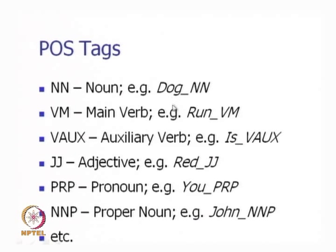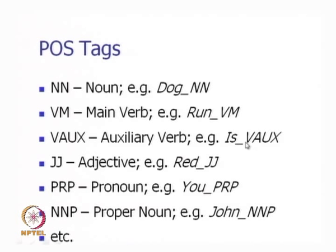Each word needs a categorization in the text; we do not leave out any word. VM is a very important tag, namely the main verb of the sentence — for example, in 'John runs,' run has the category VM, main verb, with an underscore. VOX is the auxiliary verb: is, am, are — these are auxiliary verbs, and they are also tagged in the text as, for example, 'is_VOX'.